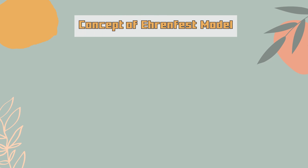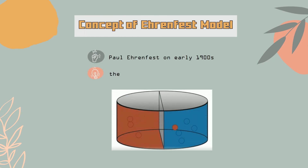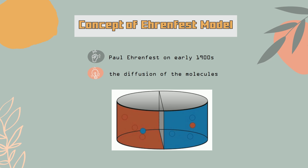The Ehrenfest model was invented by Paul Ehrenfest in the early 1900s to explain the diffusion of molecules. This model is a simple discrete model for the exchange of gas molecules in a box, which is divided symmetrically into two parts by a partition. In the box, the gas molecules move randomly between the partitions.